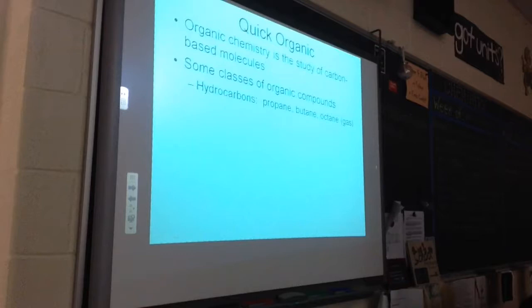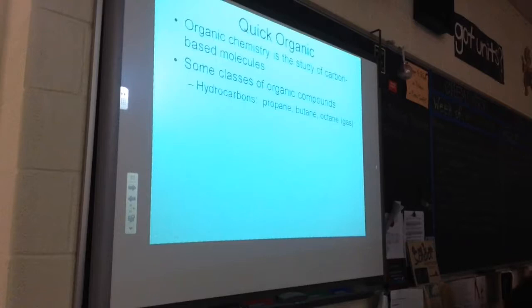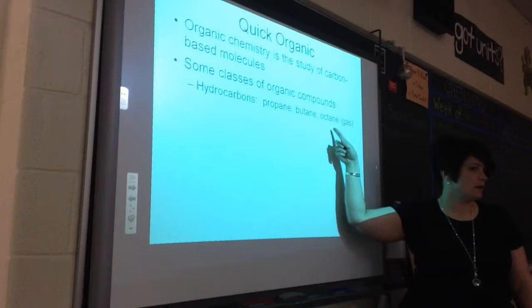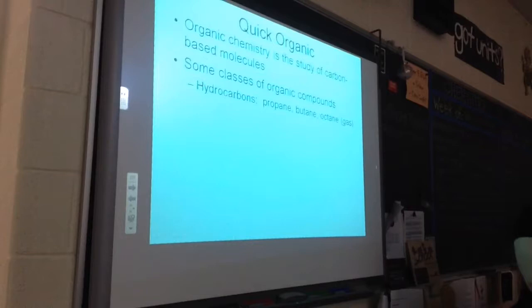When we talk about hydrocarbons in organic chemistry, we're talking about propane, butane, octane — typically what we think of as fuels that we burn. Octane, for example, is the technical name for gasoline, and it has eight carbons — that's how it gets its name. I think it's C8H18.